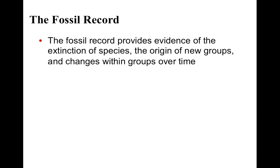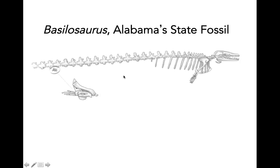The fossil record provides a huge amount of evidence for evolution by showing us the evolutionary history of life on earth. We see the extinction of species, the origin of new groups — species, families, phyla — and changes within these groups over time. Here, for example, is a fossil of an organism called Basilosaurus, which is Alabama's state fossil, but it unfortunately has a name suggesting it's some type of dinosaur, and originally that's what it was thought to be.